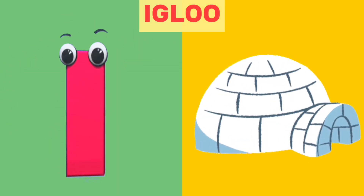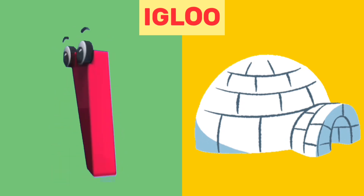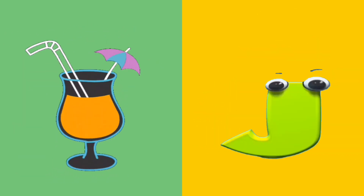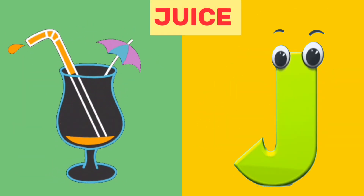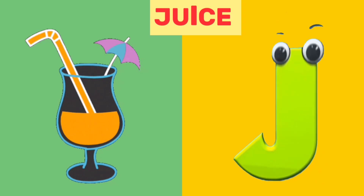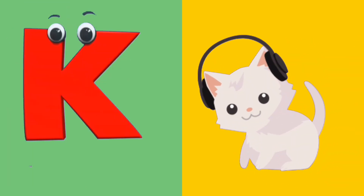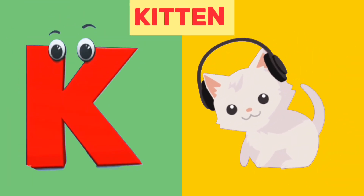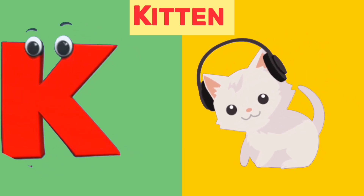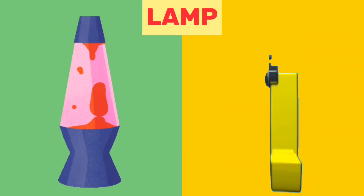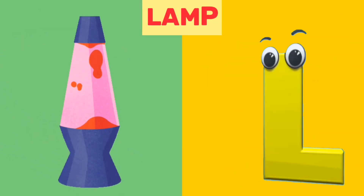I is for Igloo. I, I. Igloo. J is for Juice. J, J. Juice. K is for Kitten. K, K. Kitten. L is for Lamp. L, L. Lamp.